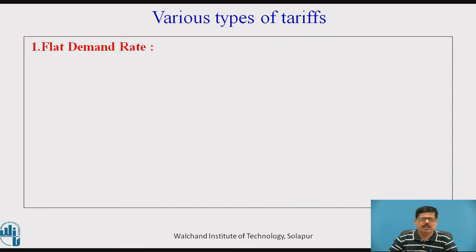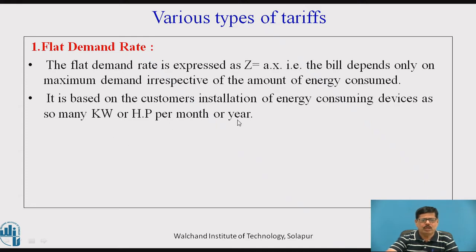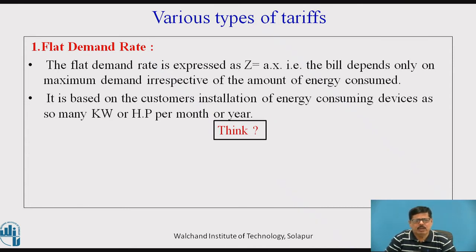The first and most simple form is the flat demand rate, expressed as Z = A × X. The bill depends only on the maximum demand X, irrespective of the amount of electrical energy consumed. It is based on the customer's installation of energy-consuming devices, such as so many kilowatt or HP per month or year. Consider for a moment which type of consumer this tariff is most suitable for.